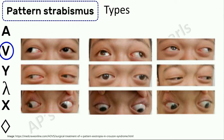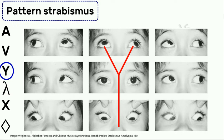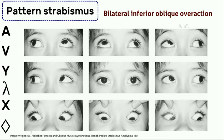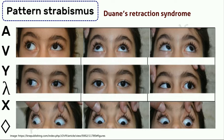A downward slant can give rise to a V pattern exotropia. This is Crouzon syndrome again with V pattern strabismus. The next is the Y pattern, where the horizontal deviation remains stable from midline downgaze to primary position and a relative divergence is seen on upgaze. It is commonly seen in bilateral inferior oblique overaction, which is often associated with infantile esotropia and intermittent exotropia. A Y pattern is also seen in Brown syndrome and Duane retraction syndrome with upshoot.